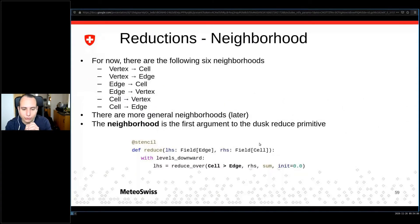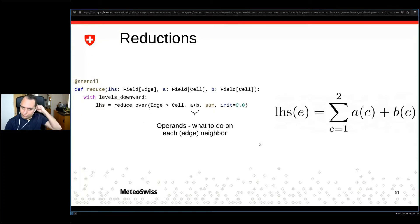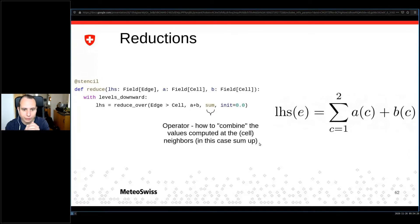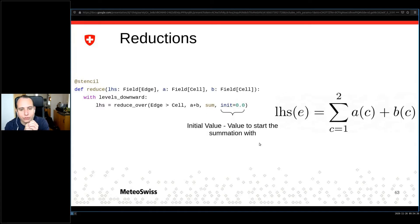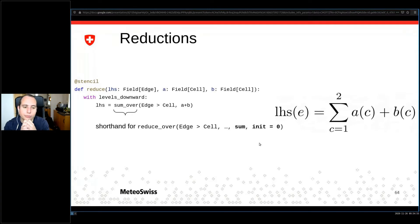Here at the bottom is a 'reduce_over' concept in Dusk. Dissecting its syntax: first we give the neighborhood to iterate over; then the operands — what we want to do at each point; then what we want to do with the individual operands to reduce them, in this case 'sum'; and finally an initial value — here we start the summation with zero. Because most reductions in the die core are summations, we introduced the shorthand 'sum_over': instead of always specifying the sum token and zero initial value, you just use 'sum_over,' which implicitly starts with zero.